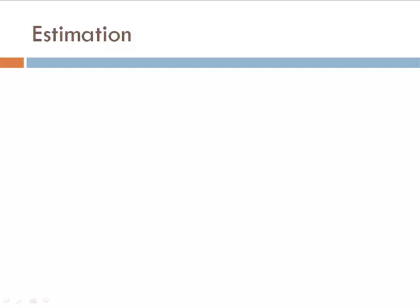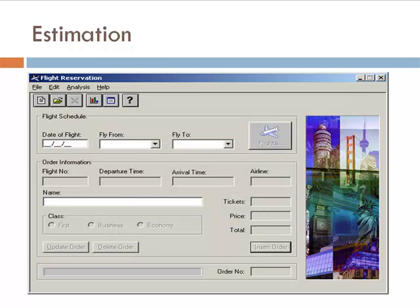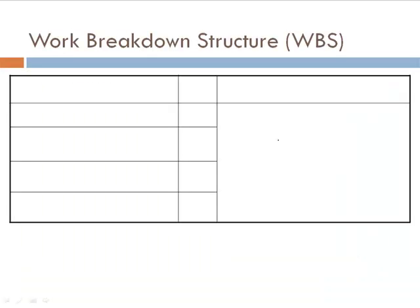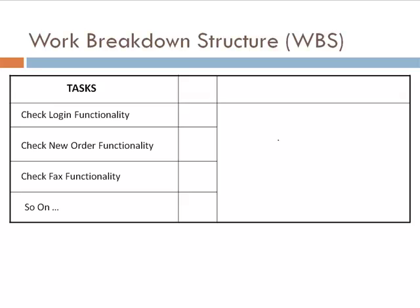Let's do an exercise. For the flight reservation application, prepare a work breakdown structure of the various testing tasks like check login functionality, check new order functionality, check fax functionality, and other similar functionalities, and estimate the effort required to test these functionalities. For example, login functionality can be tested in 2 hours.